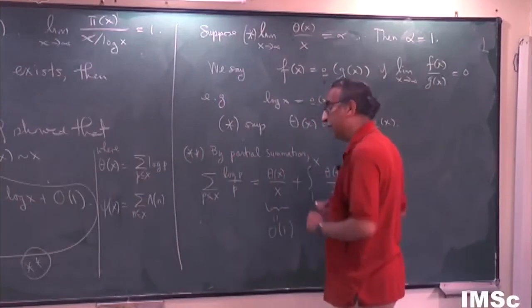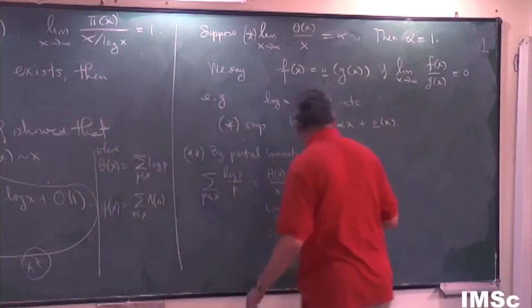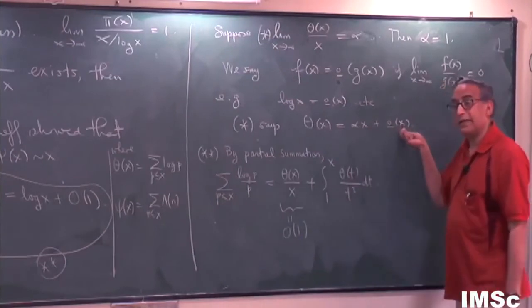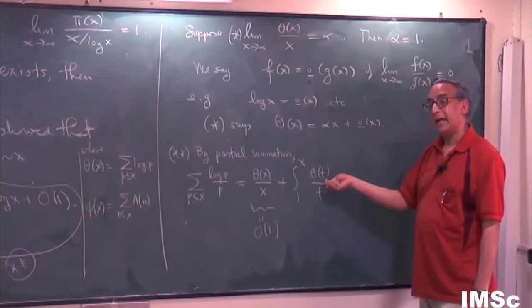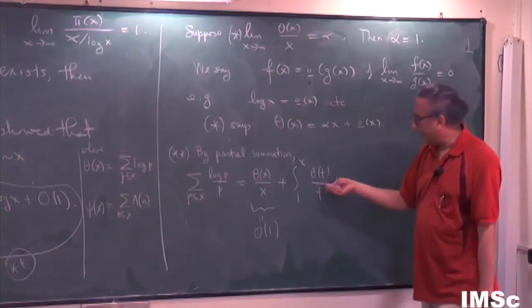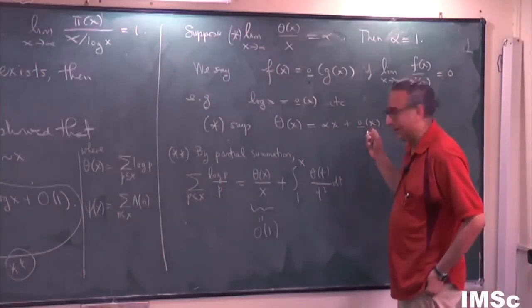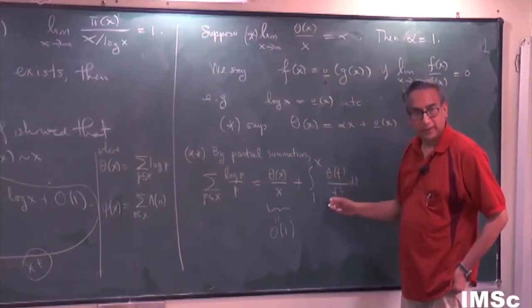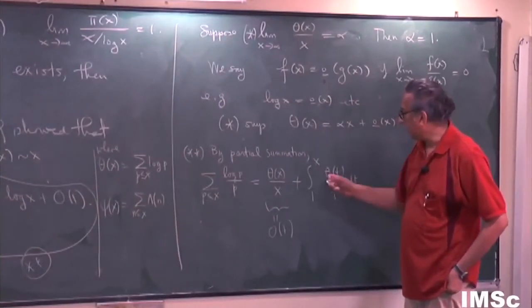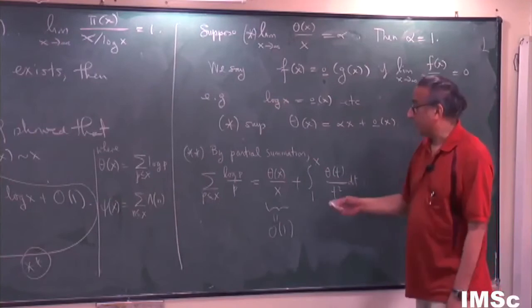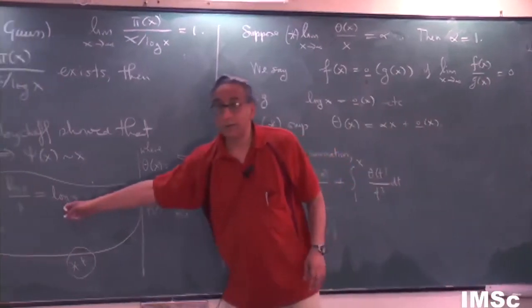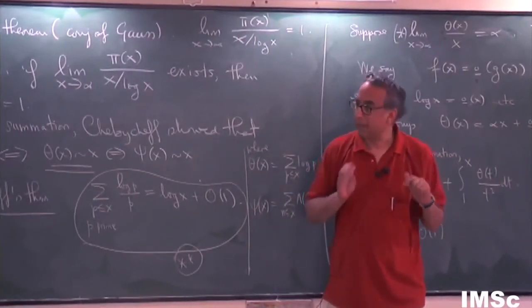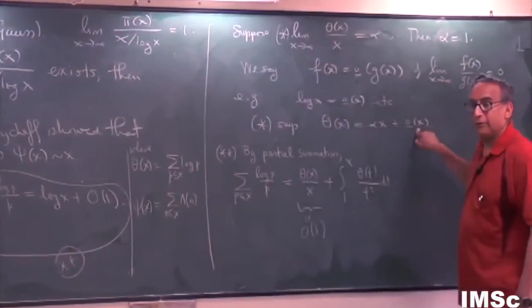So I'd like to plug in θ(t) equals αt plus little o of t into here. And let's just do this mentally for a second. If I plug in θ(t) to be αt plus little o of t, I would get αt plus little o of t divided by t squared. That would be α over t dt and α over t dt integrates to α log x. So at least, so if that's the case, well, there's a log x there. Therefore, α better be 1. So that's kind of the proof, but there's something wrong with that proof. Look, something wrong is how you treated the little o factor.